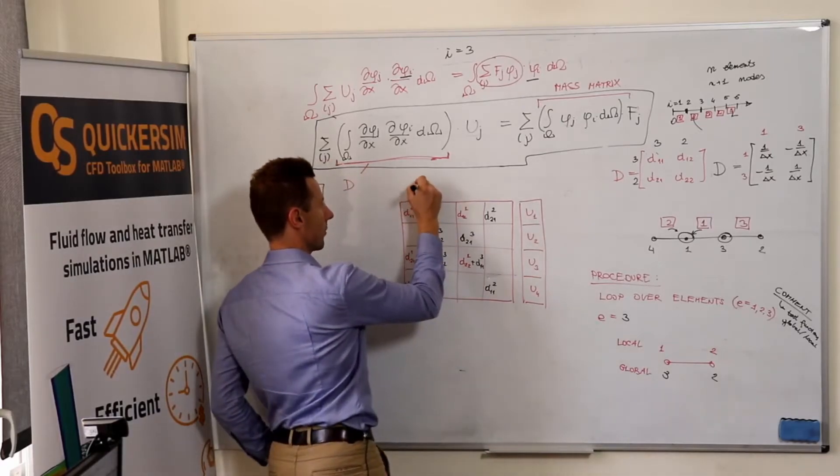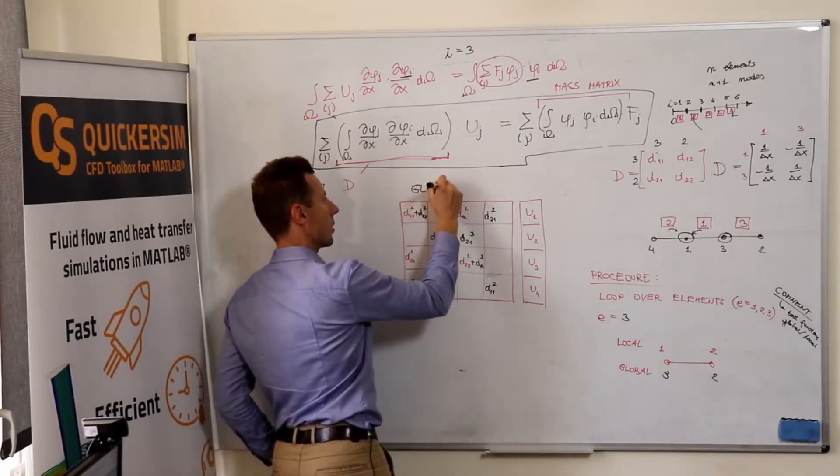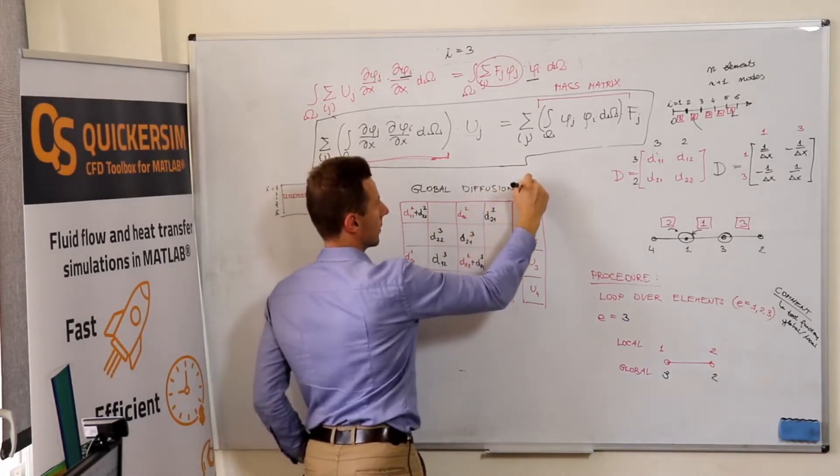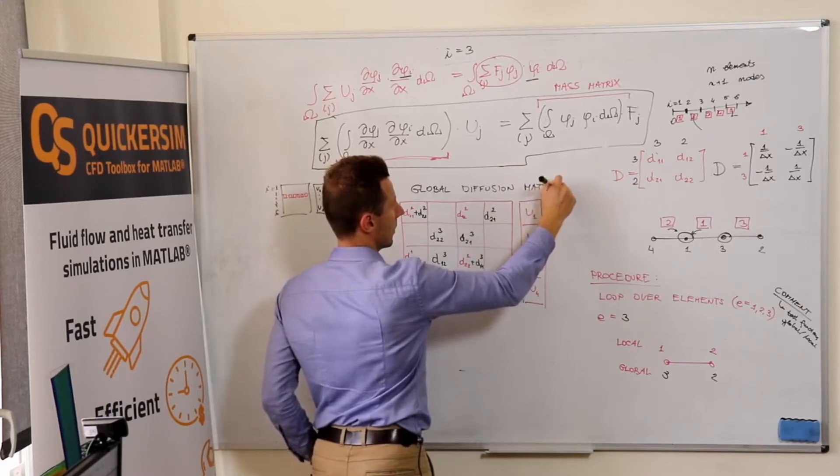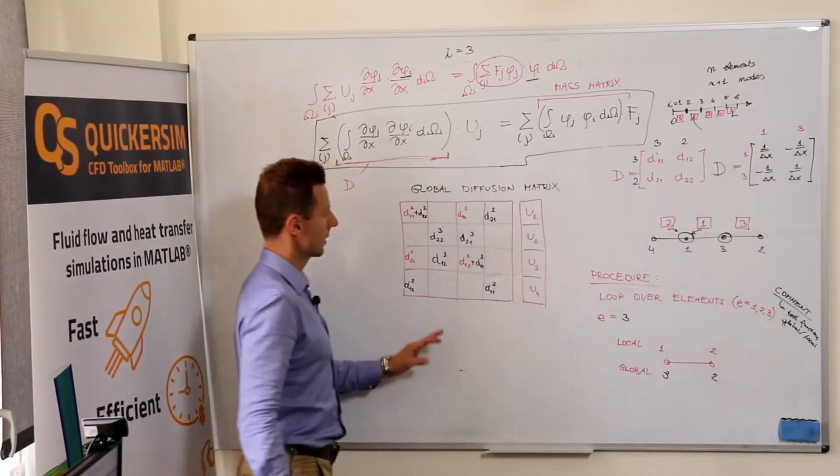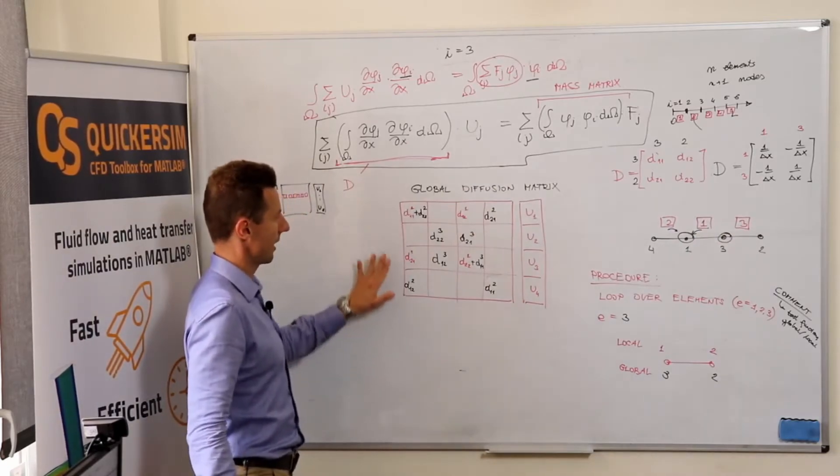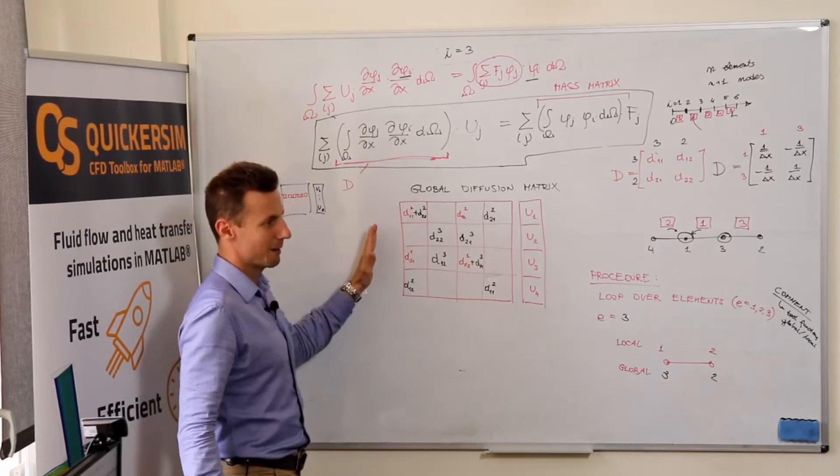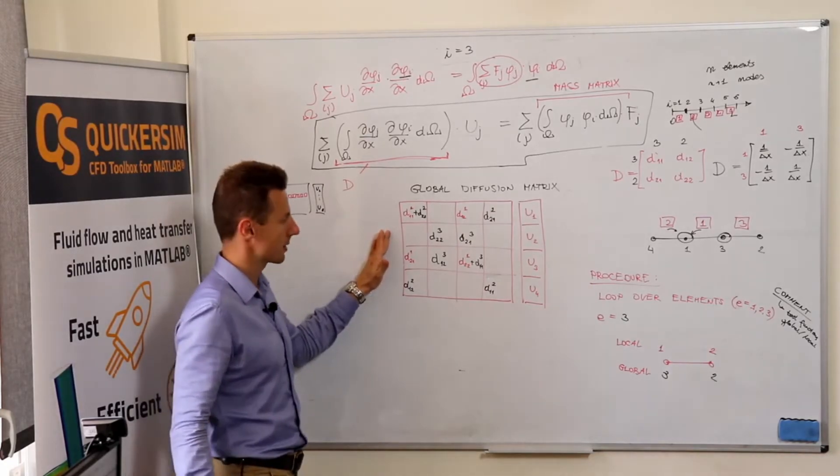Important thing. It's global diffusion matrix and local diffusion matrix. Well, maybe not self-evident, but believe me, still symmetric matrix and symmetric positive definite matrix. As always, the diffusion matrix.